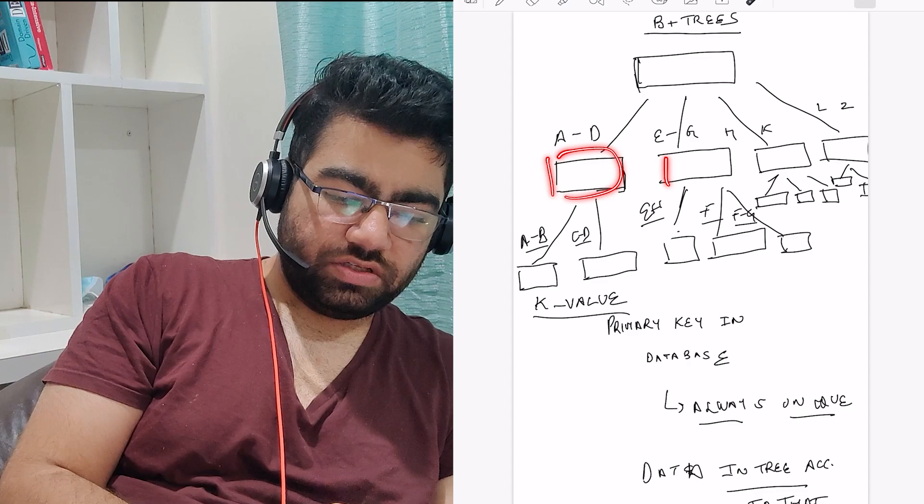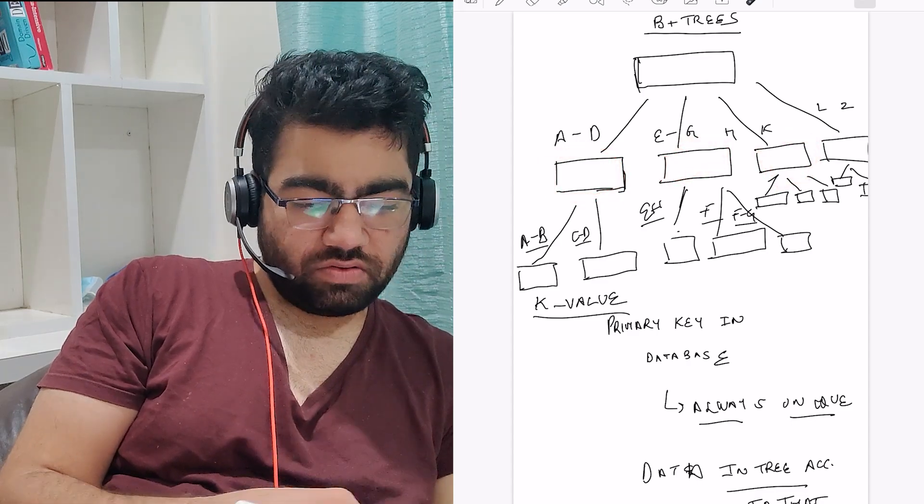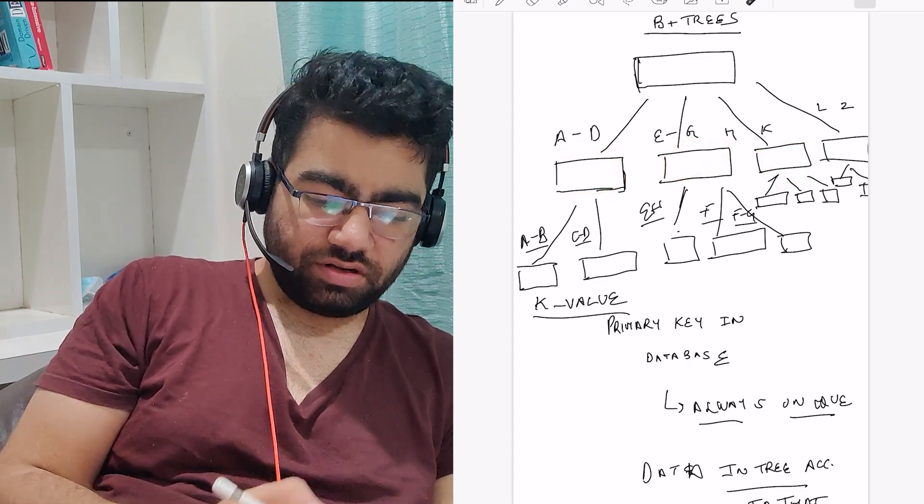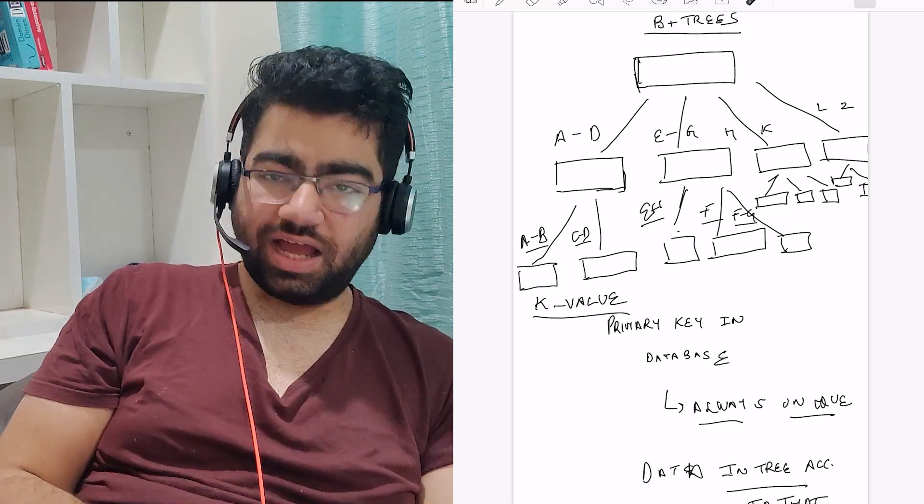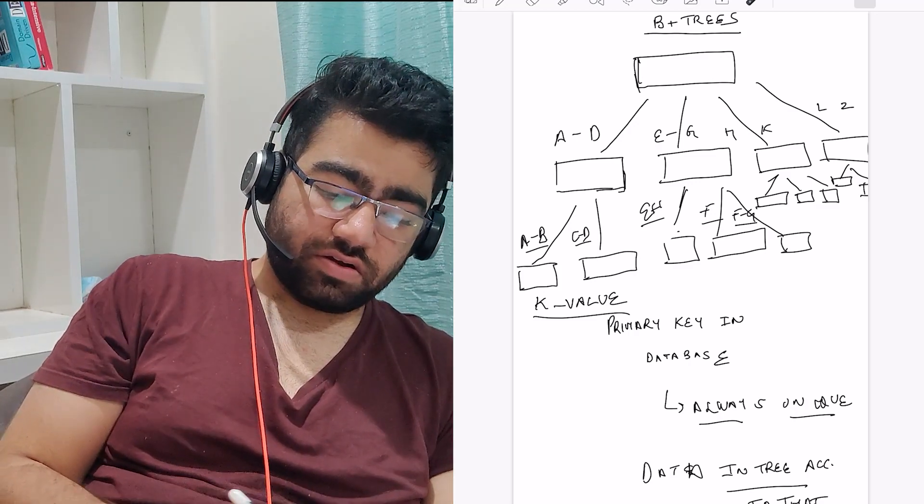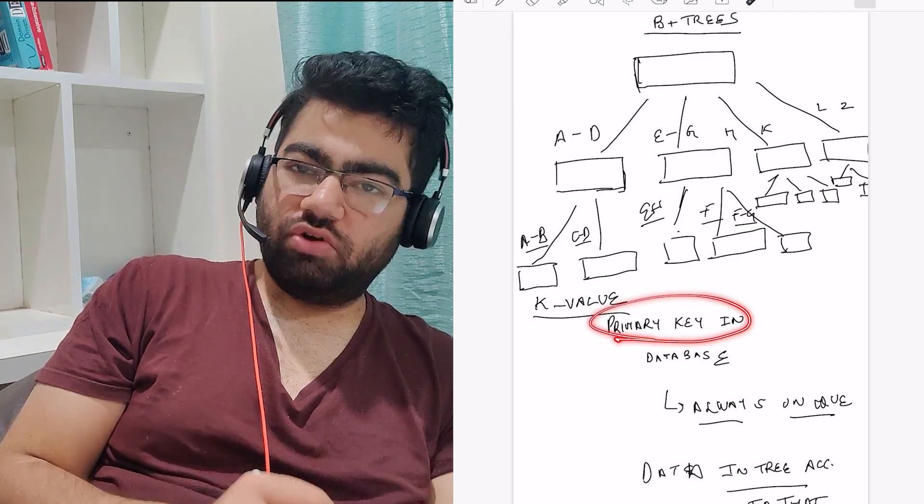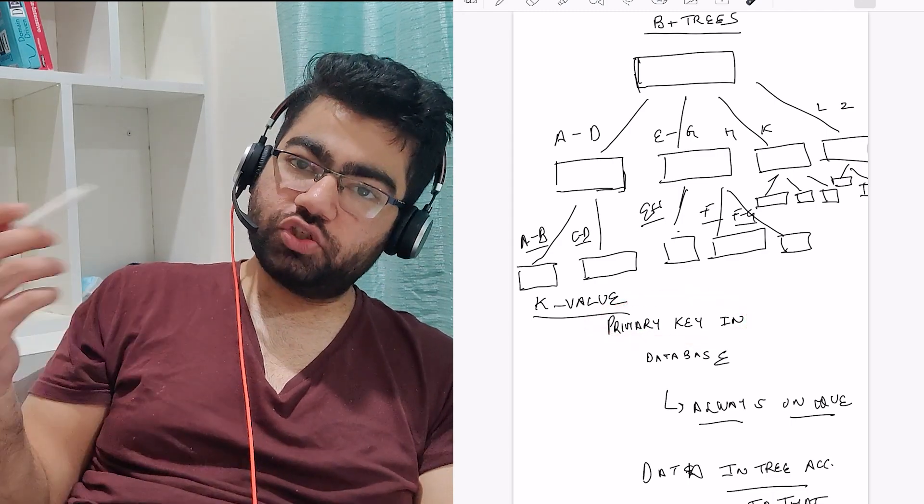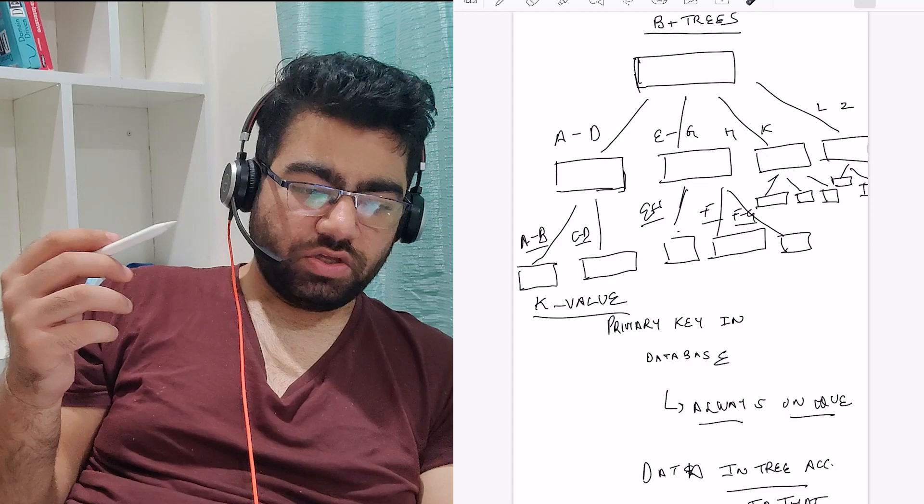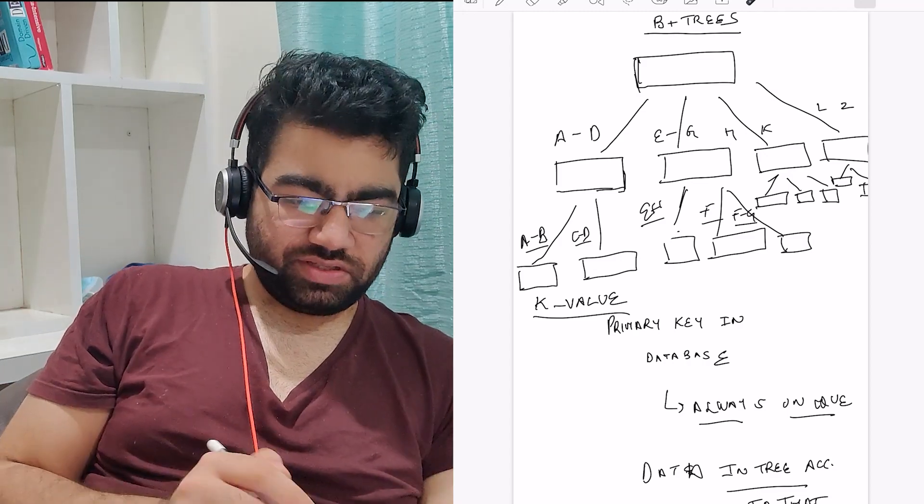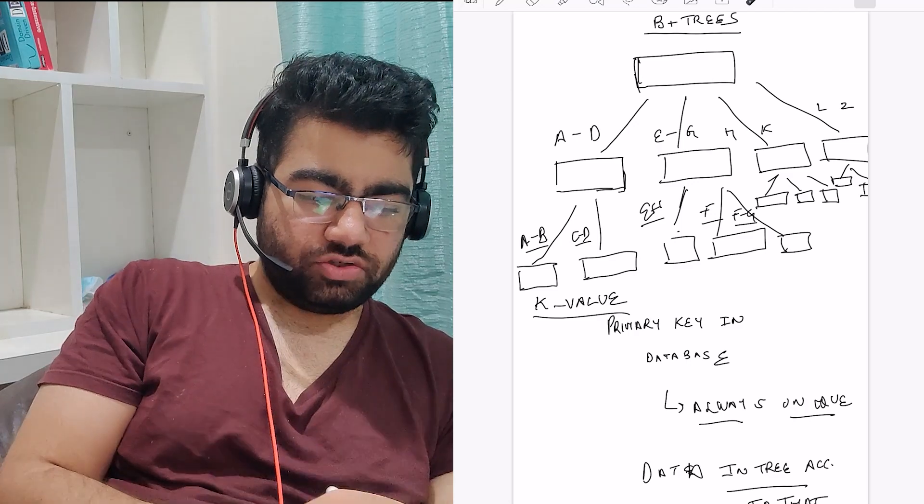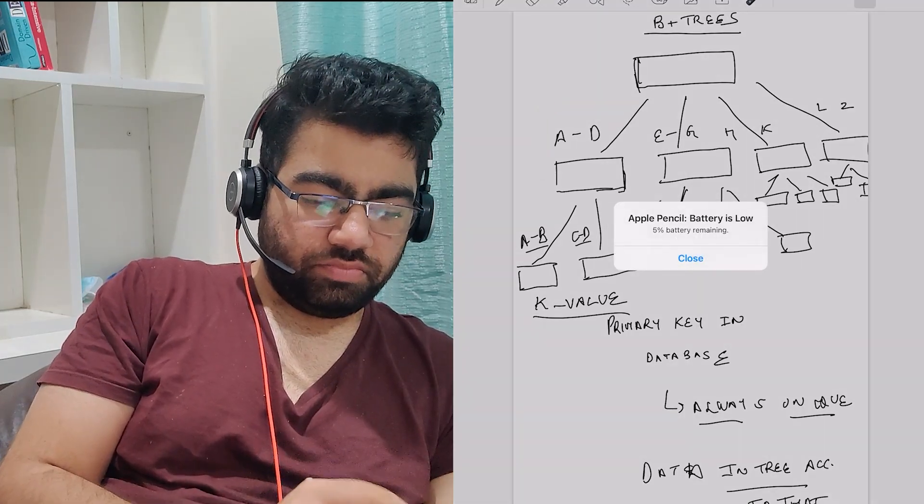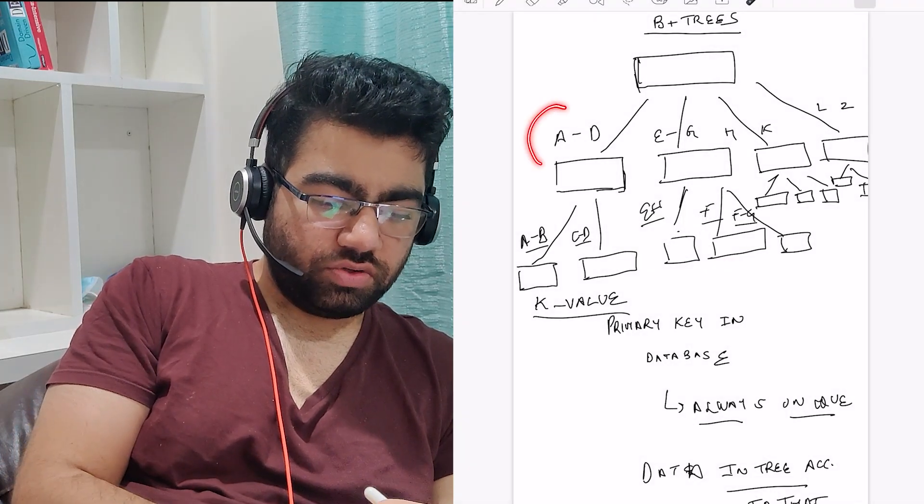It can have any number of branches. Whenever each SQL database which you have, it has a primary key in it which is a unique key, and mostly the search on that primary key is also fast. What happens when you create a database is that it sorts the values on the basis of that primary key and stores it into the B+ trees.